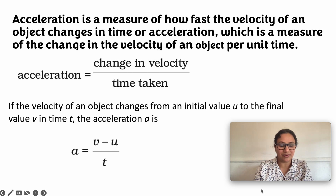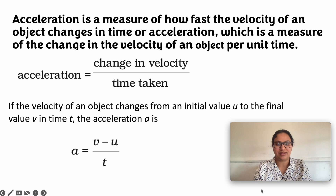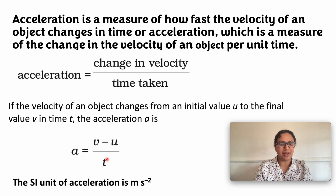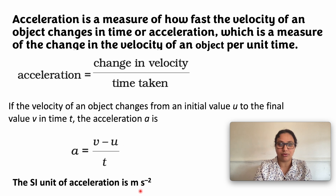Here, v is the final velocity and u is the initial velocity — meaning the velocity of an object changes from its initial value to its final value. The SI unit of acceleration is meter per second square. This is because acceleration equals velocity divided by time: velocity is meter per second and time is in seconds, so meter per second divided by second gives meter per second square, or meter second inverse squared.